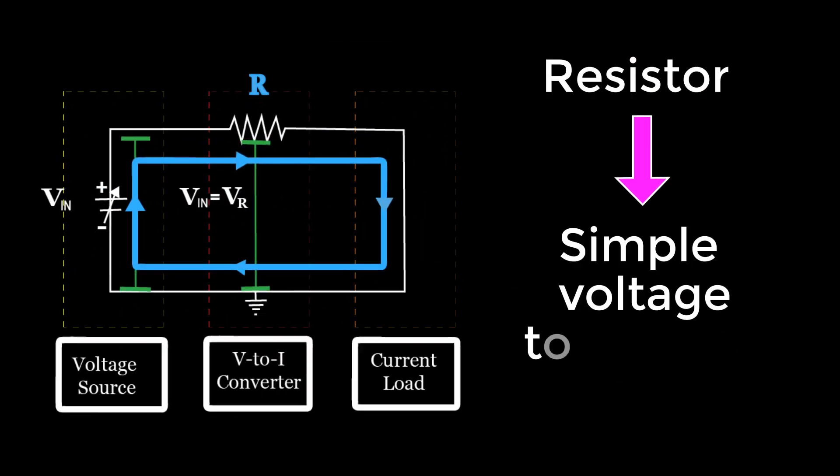The circuit diagram of a resistor which performs as a simple voltage to current converter is represented here. In this diagram, the electrical quantities such as voltage and current are represented through bars and loops respectively.